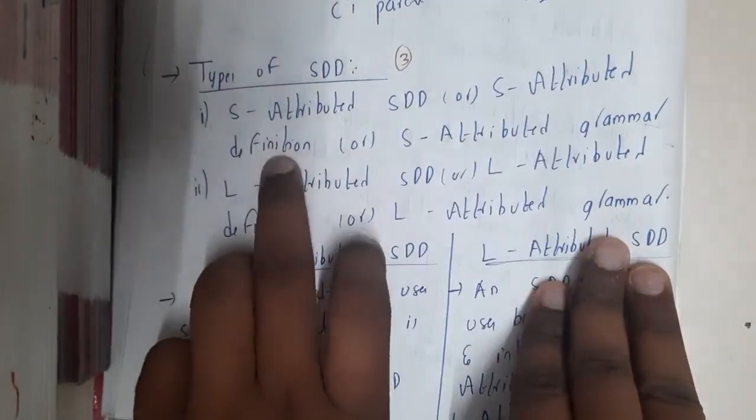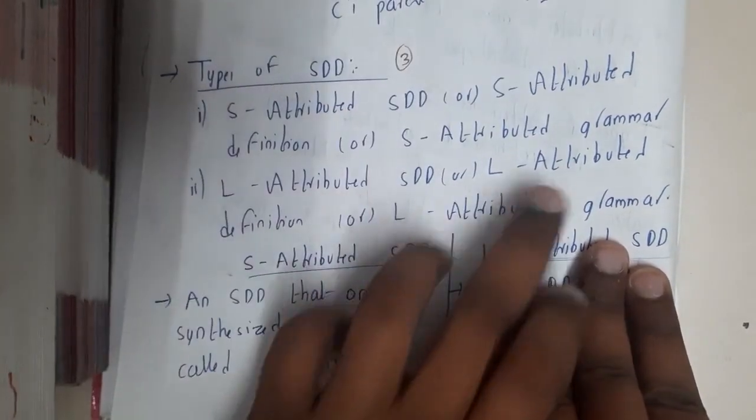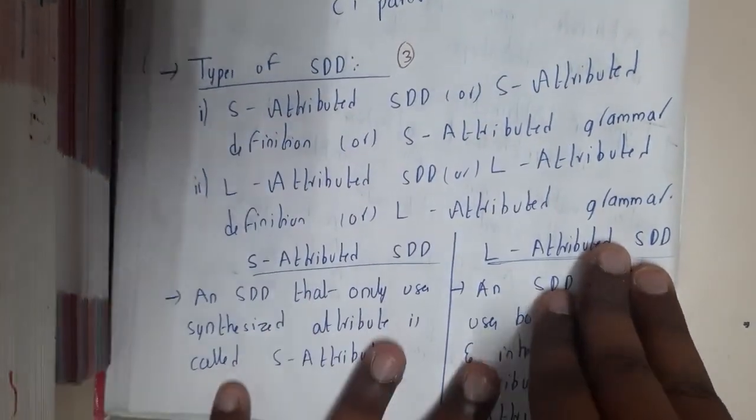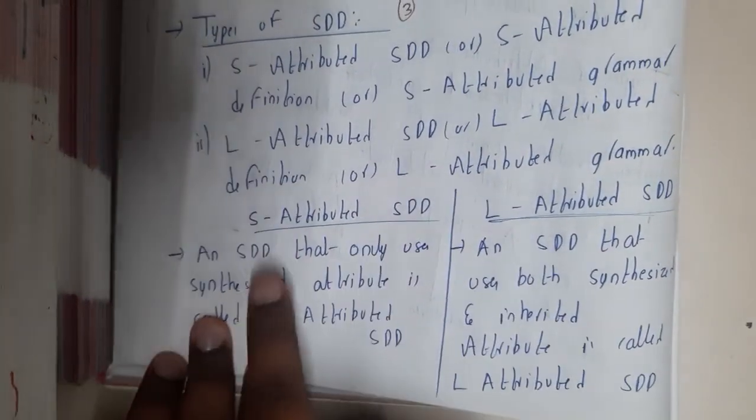S-attributed SDD or S-attributed definition or S-attributed grammar. Similarly, L-attributed SDD or L-attributed definition or L-attributed grammar. Just by observing the names itself, you can identify. S-attributed is nothing but it uses